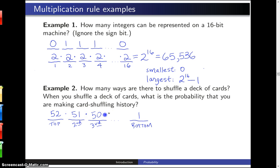And these all get multiplied. By the multiplication rule, there will be 52 factorial different ways to shuffle a deck of cards. And this is approximately 10 to the 68th power.